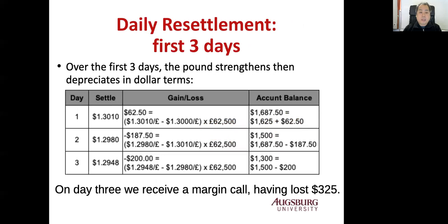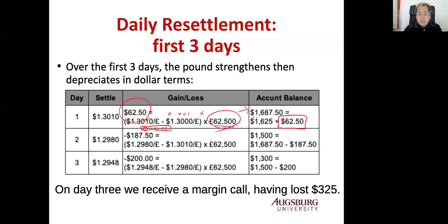Over three days, the pound depreciates in dollar terms in this example. On day one, the settlement price is $1.3010, so you gain $62.50 because the pound appreciated by $0.001 and the contract size is 62,500 pounds. Your account balance increases to $1,687.50.